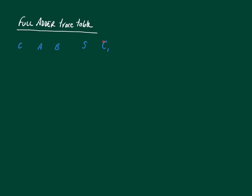If we've got zero as a carry from the previous column and A and B are zero, then the sum of course should be zero because three zeros added together is zero, and of course the carry should be zero as well.